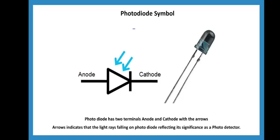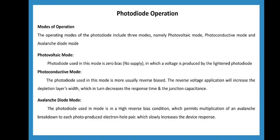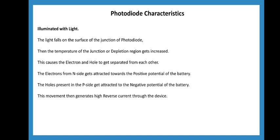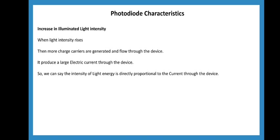Photodiode: it is operated in reverse bias with a supply. When light is incident on the photodiode, current is produced. In the absence of light, dark current flows. When light source intensity increases, electric current increases.